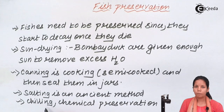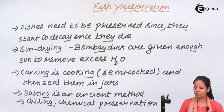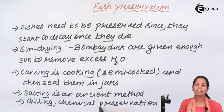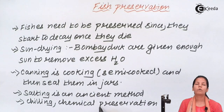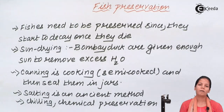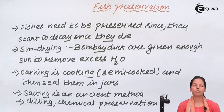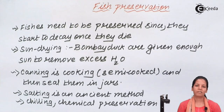Also, chilling — putting them in cold refrigerators — and chemical preservatives are other newer techniques that have been found to extend the shelf life or the sustainability of fishes to a greater extent. In this part of the chapter, we came across the various fish preservation methods. I hope that we are very clear with this concept. Thank you.